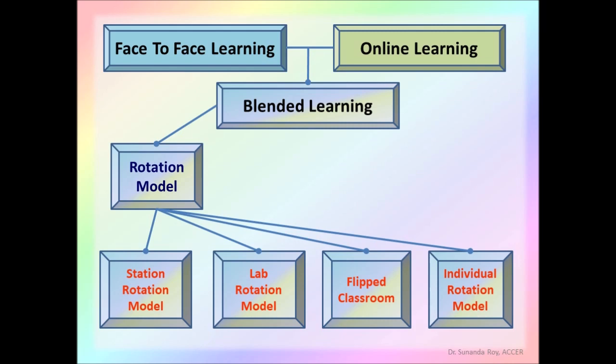Let's go back to our diagram. So these were the subtypes of rotation model: station rotation, lab rotation, flipped classroom, and individual rotation model. This is all coming under the first model, which is the rotation model. The second model is the flex model.